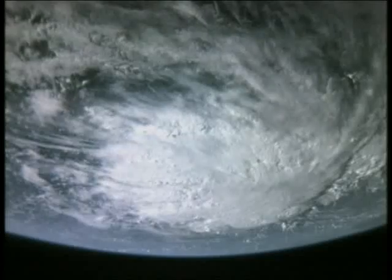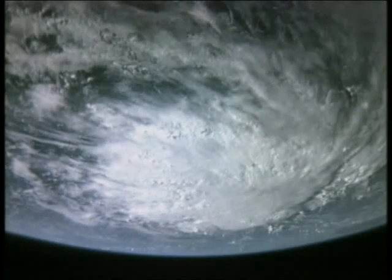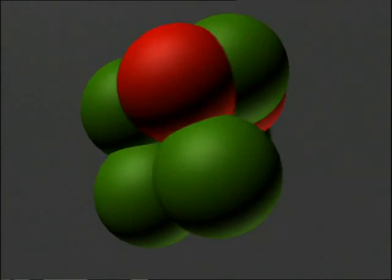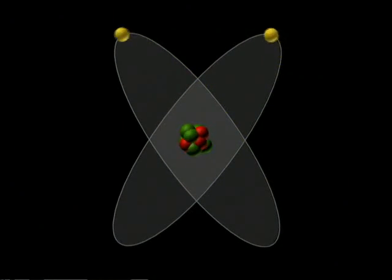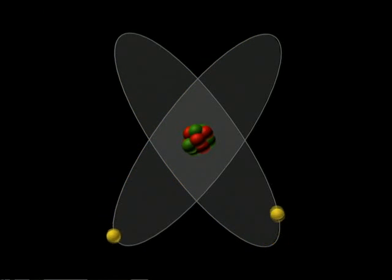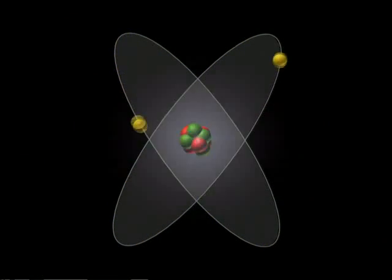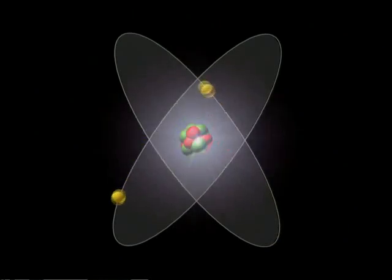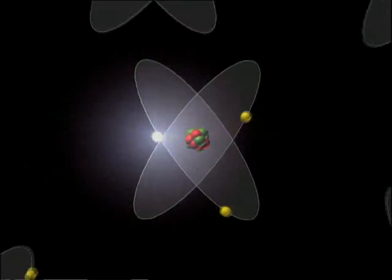To understand what radiation is, you have to go back to the basic structure of an atom. All atoms have a nucleus, made of neutrons and protons. Surrounding it are electrons. The nucleus of a radioactive atom is unstable. It can break up at any time, emitting radiation as a result.